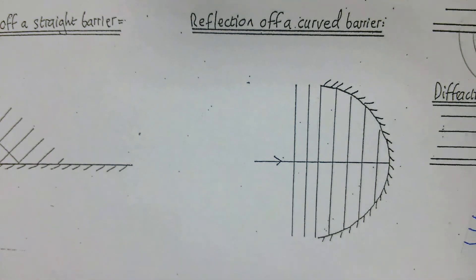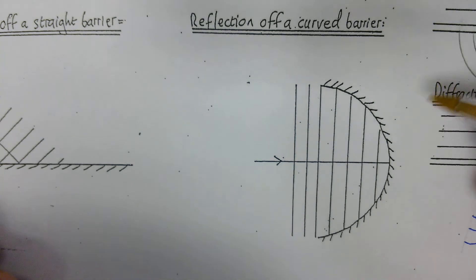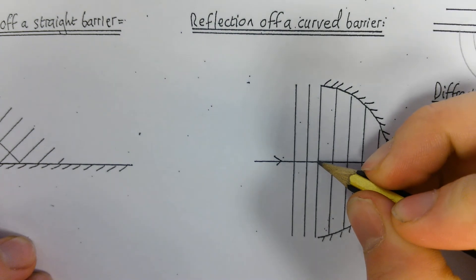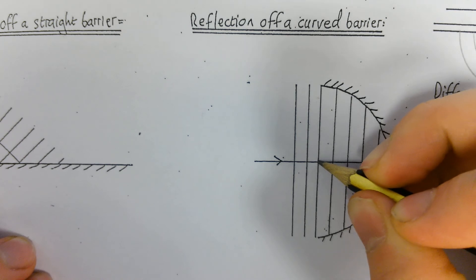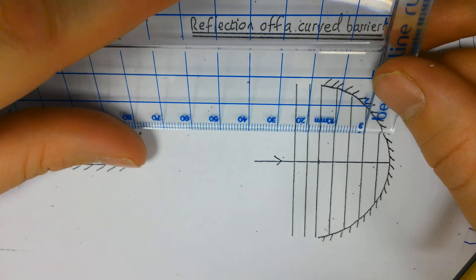In this diagram we're going to be looking at the diagram for reflection of a curved barrier. I'm going to start by drawing a focal point where all the waves are going to come to — I'll do all of this in pencil. The focal point is just here in the middle. You don't have to mark it as strongly as I am, it's just so you can see it on the diagram.